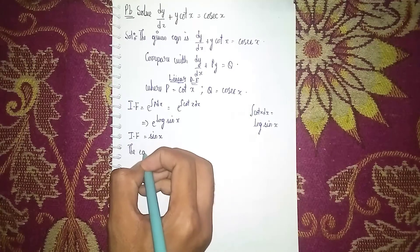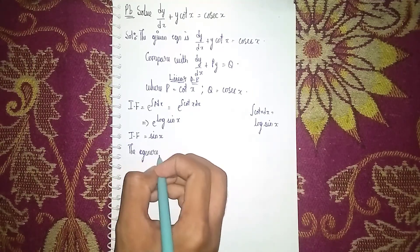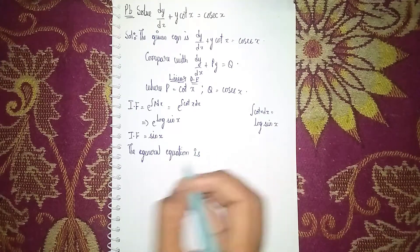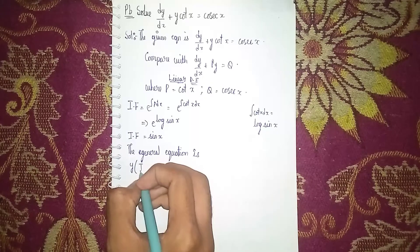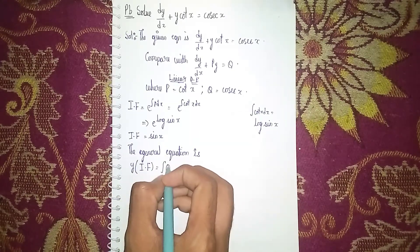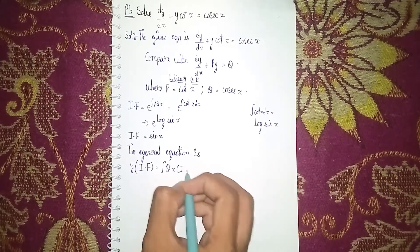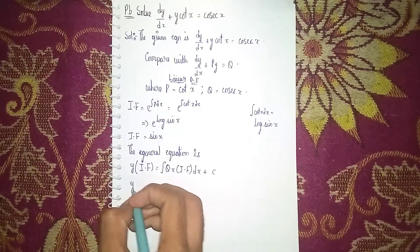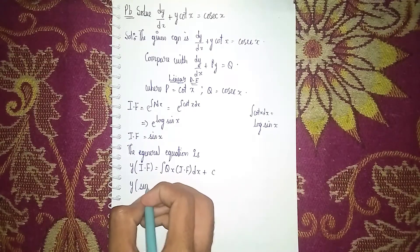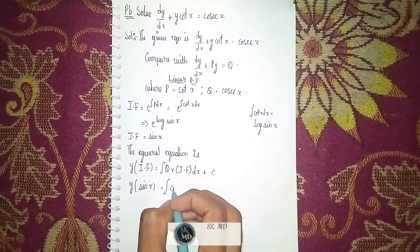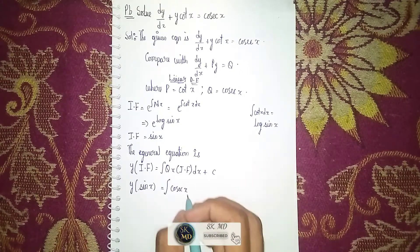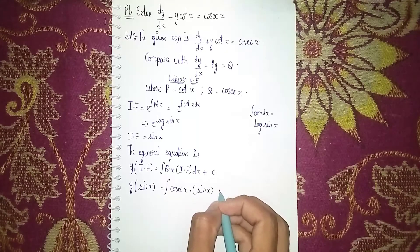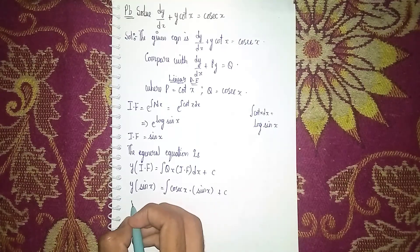Next, we have to find the general solution. The general equation is y times the integrating factor equals the integral of Q times the integrating factor dx plus C. Here, the integrating factor is sin(x), so y·sin(x) equals the integral of cosec(x) times sin(x) dx plus C.